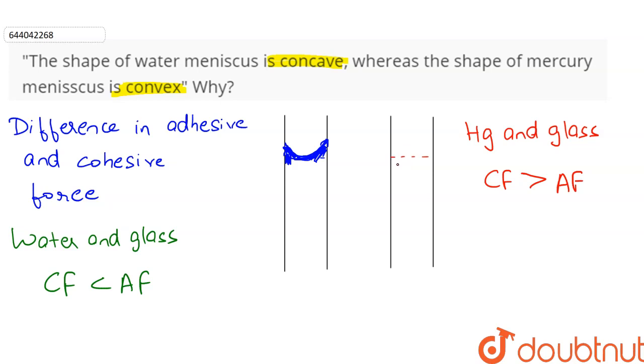Because of this imbalance of force, the mercury molecules pull the surface molecules inwards. Therefore, the meniscus becomes convex.